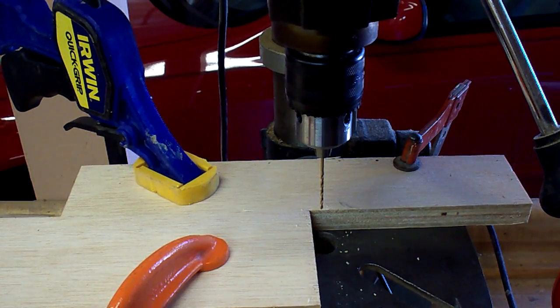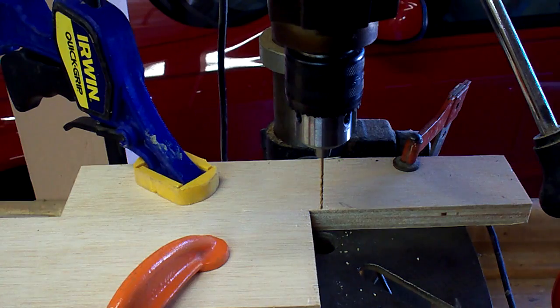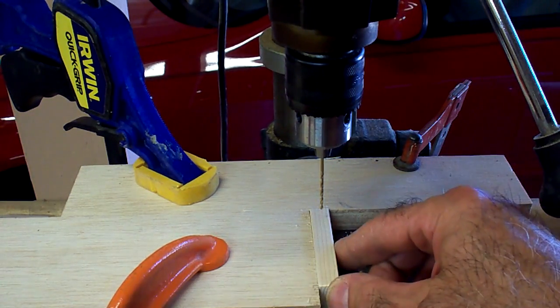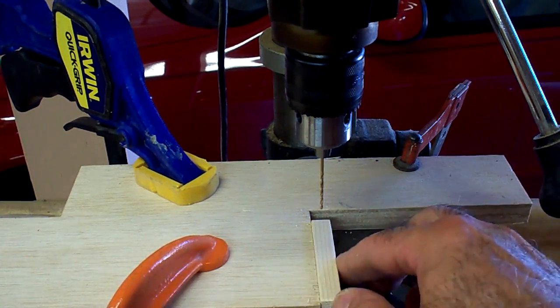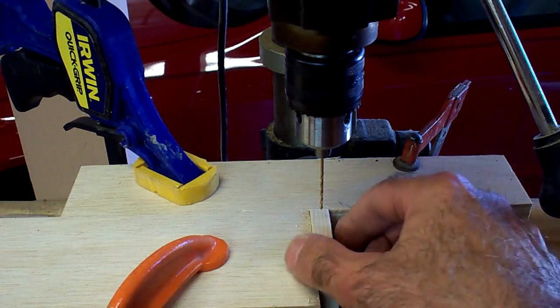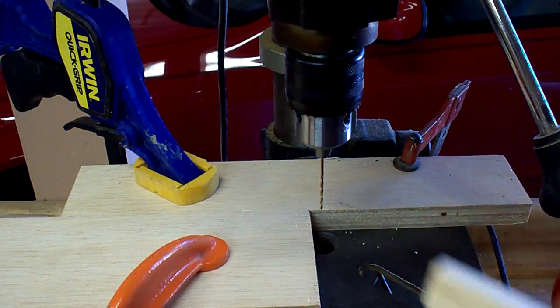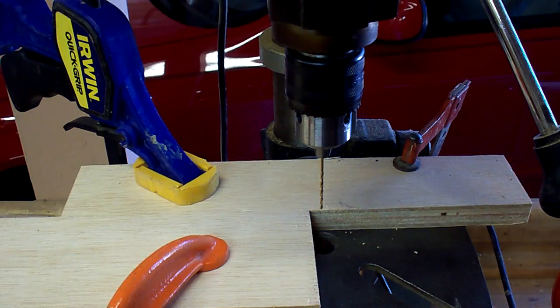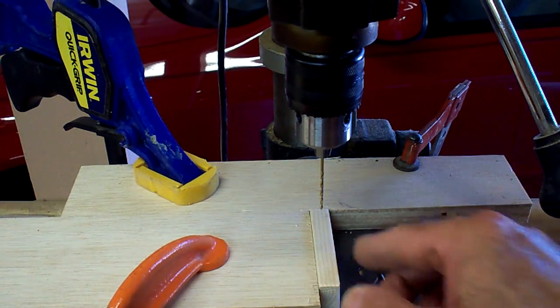A few clamps, a couple blocks of wood, and we're ready to start drilling. The way this is set up, I can take my little pieces, put them in here, drill the one end, turn it around, drill the other end. Then I'm going to reset the jig so I can drill the center holes. I'll go ahead and drill these two just to show you what I mean.